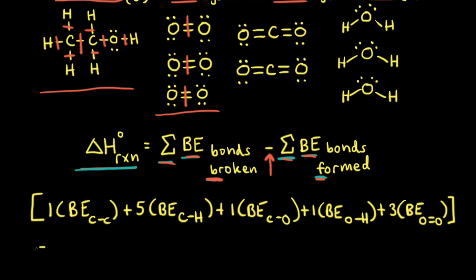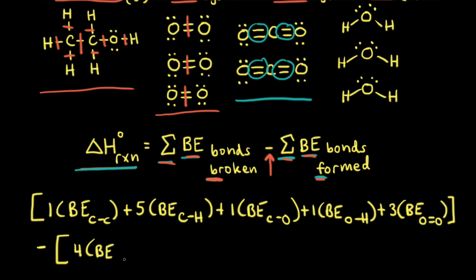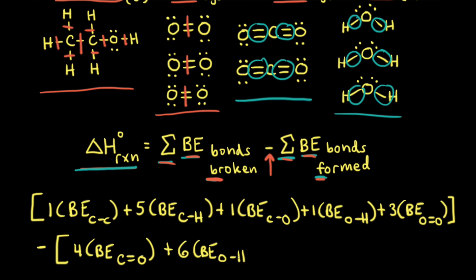We're going to write a minus sign and then sum the bond enthalpies of the bonds that are formed. In our balanced equation, we form two moles of carbon dioxide — I've drawn two molecules of CO2 — and in each molecule of CO2 we form two carbon-oxygen double bonds, for a total of four. So we write four times the bond enthalpy of a carbon-oxygen double bond. We also form three moles of H2O, and in each water molecule we form two oxygen-hydrogen single bonds, giving six total. So we add six times the bond enthalpy of an oxygen-hydrogen single bond.